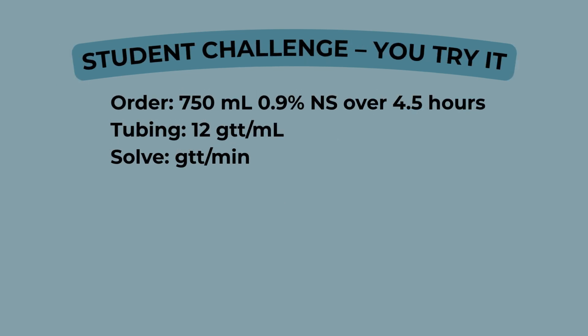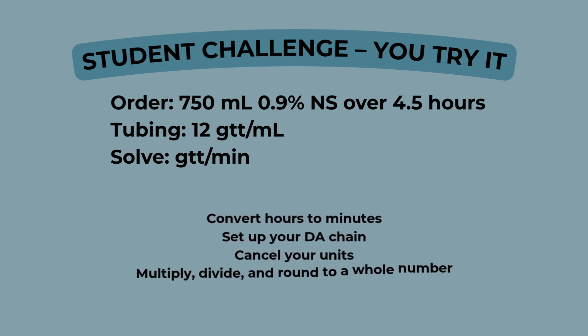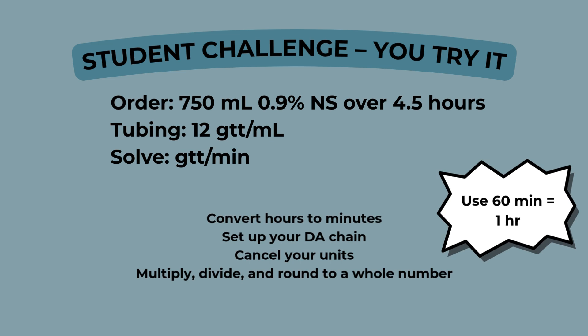Here's your challenge. The provider orders 750 milliliters of 0.9% normal saline to infuse over 4.5 hours. The only available tubing is labeled 12 drops per milliliter. Can you calculate the drip rate in drops per minute? Convert your time, set up your chain, cancel your units, and round to a whole number. Pause here and give it a try.